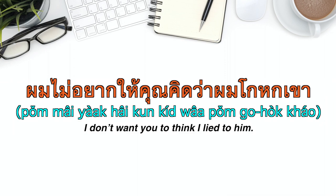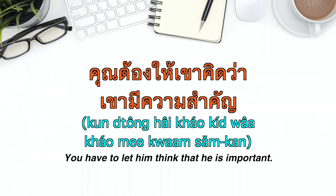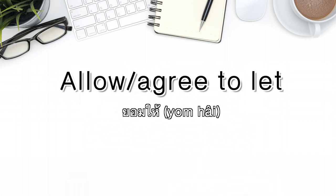ผมไม่อยากให้คุณคิดว่าผมโกหกเขา — 'I don't want you to think I lied to him.' คุณต้องให้เขาคิดว่าเขามีความสำคัญ — 'You have to let him think that he is important.' We can also use ยอมให้ (yorm hai) to mean 'allow' or 'agree to let.'